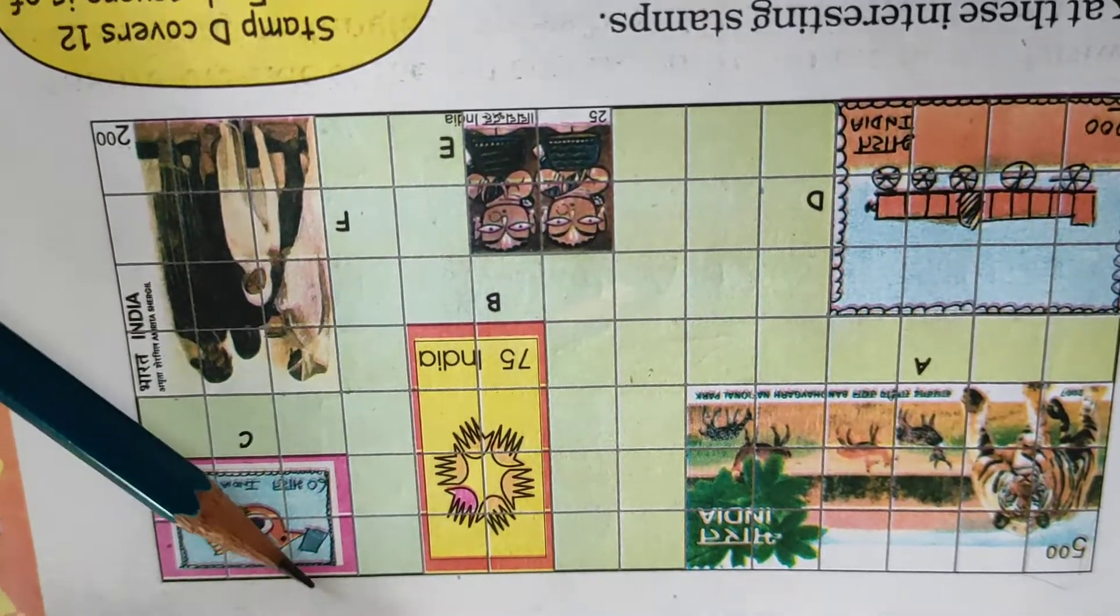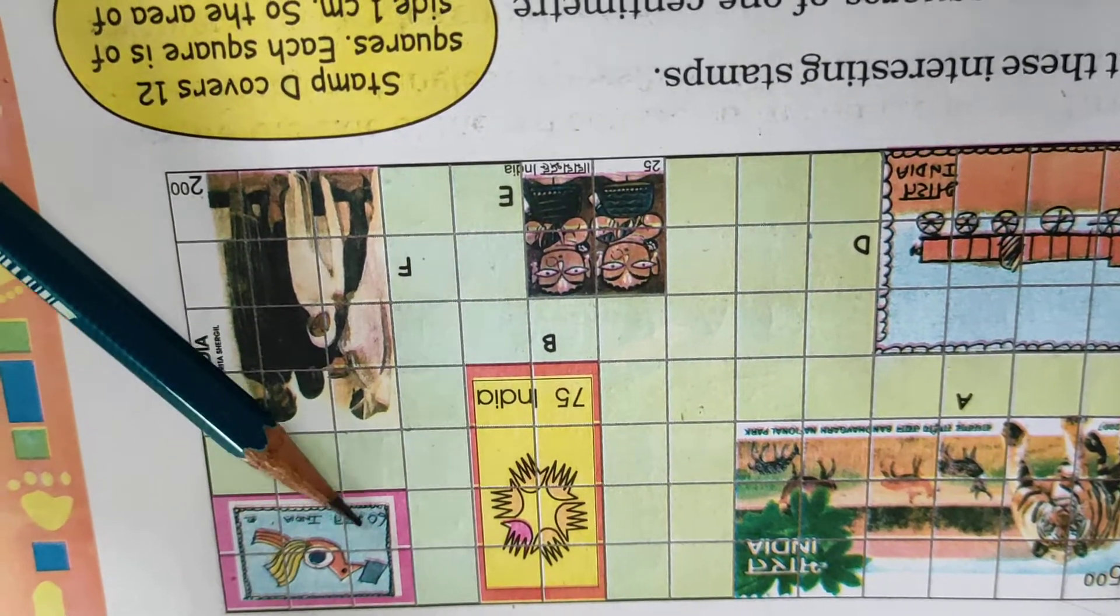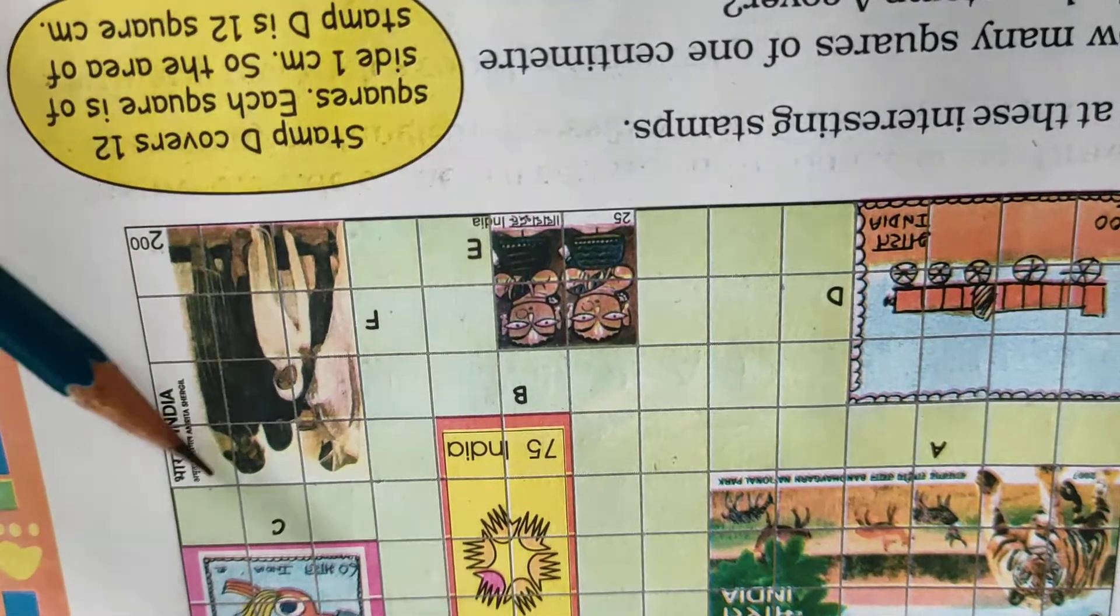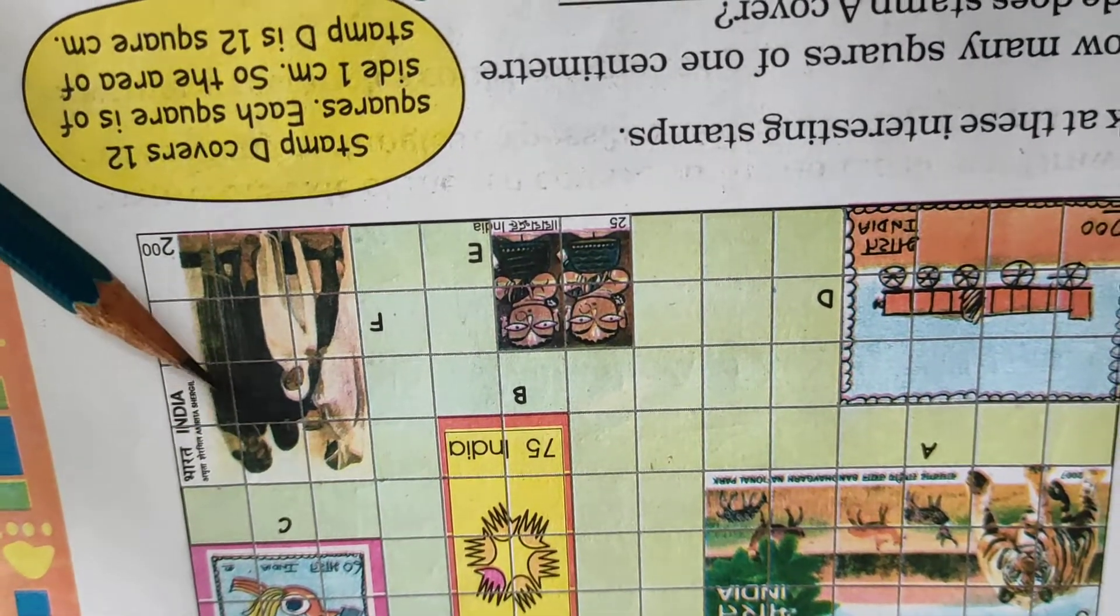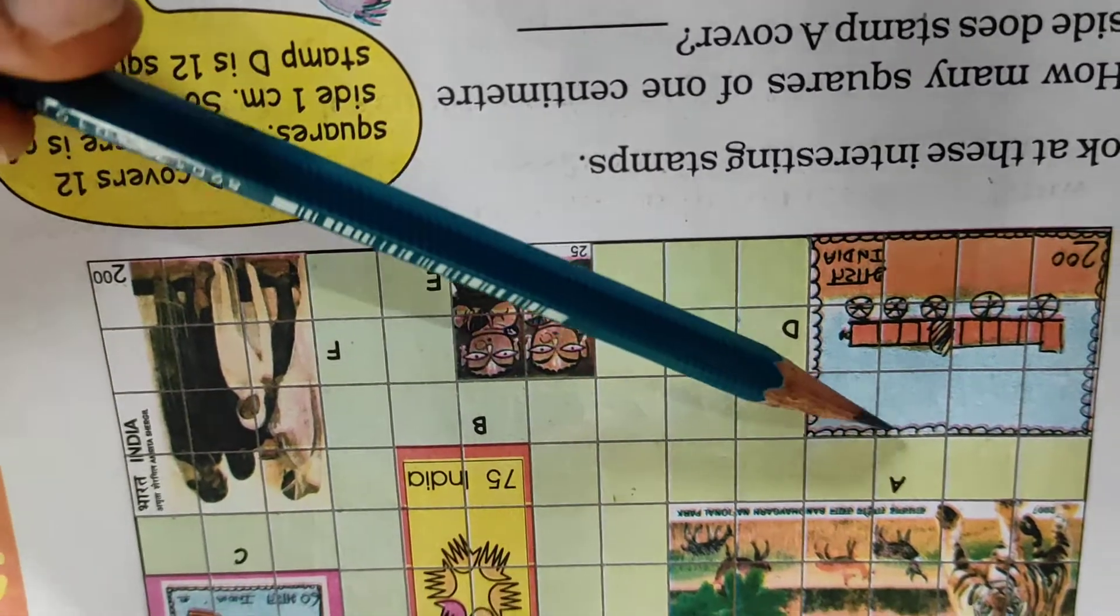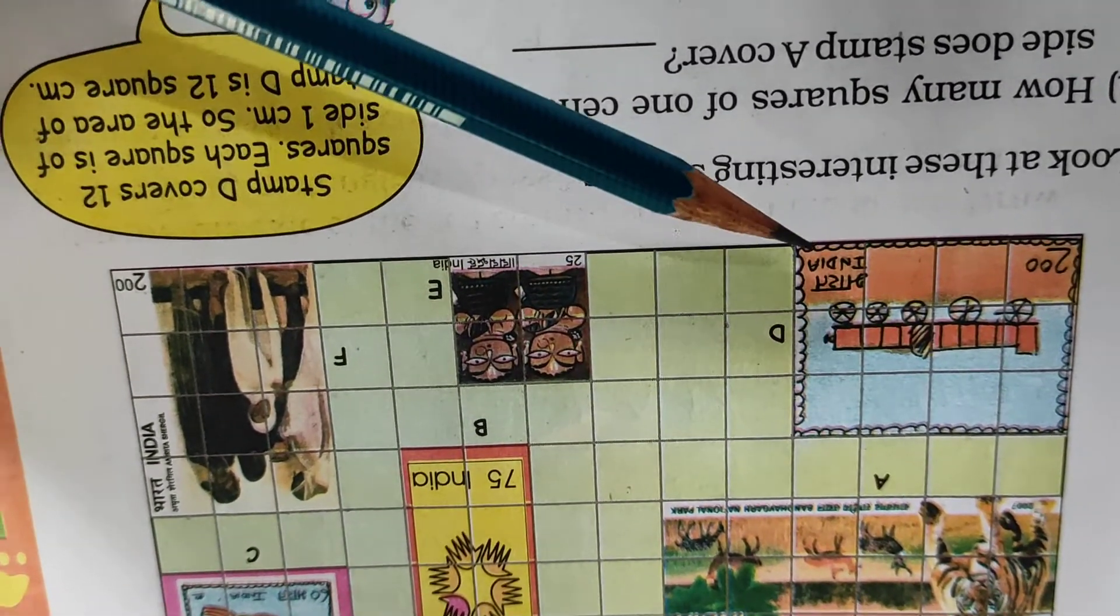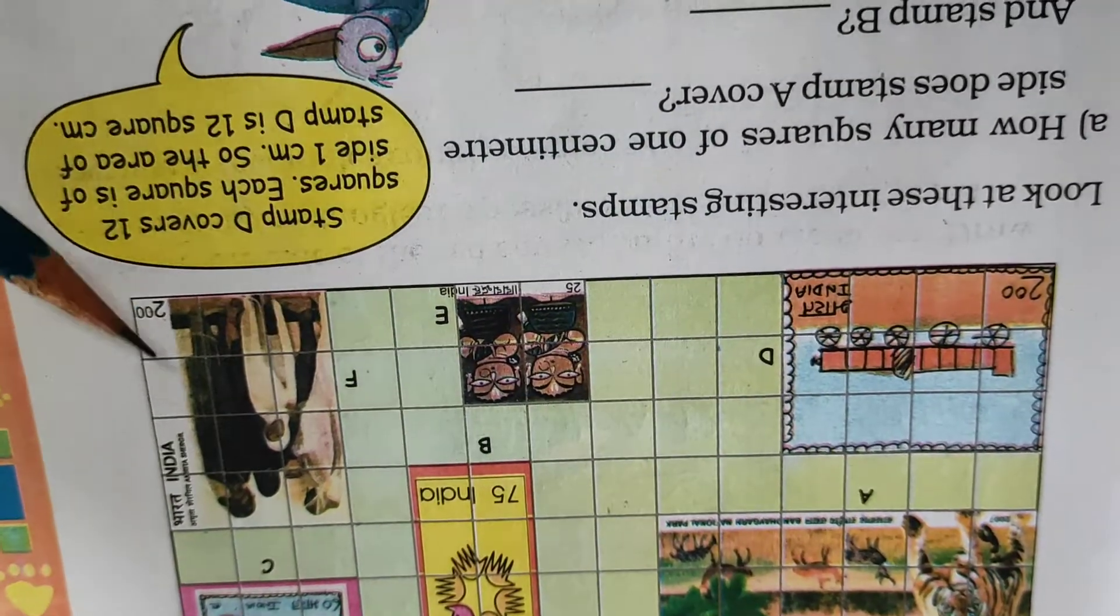So which two stamps? Here is 6, here is 4, 3, and 3, 6, and 3, 9, and 3, 12. 4, and 4, 8, and 4, 12. This and this. That means D and F.